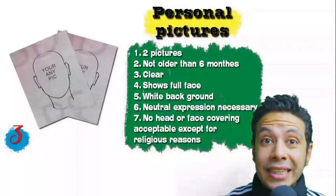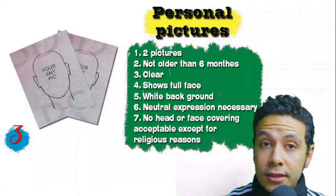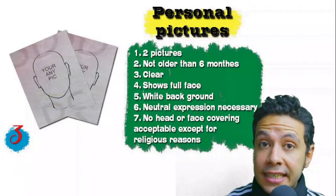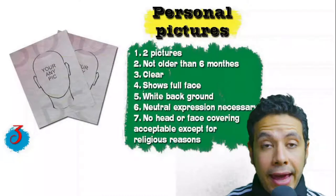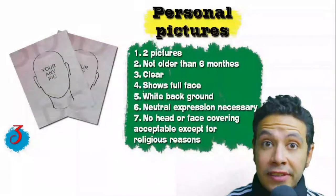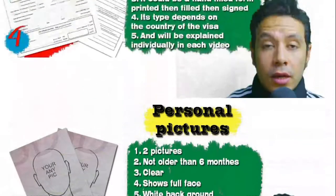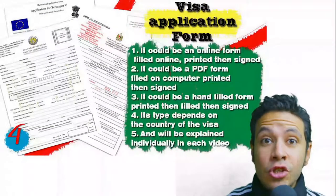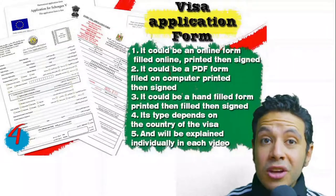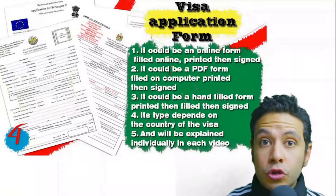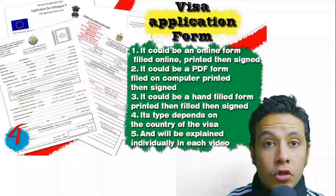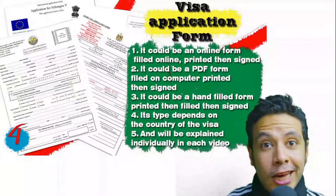In some cases you might be required to photocopy every single page of your passport, but generally only the data page and photo page are needed. For personal pictures, you will need at least two — must be new, not older than six months, clear and showing your full face, preferred with a white background, with normal neutral expressions. No head or face covering is acceptable except for religious reasons. For the visa application form, generally one copy is needed, sometimes two or three.